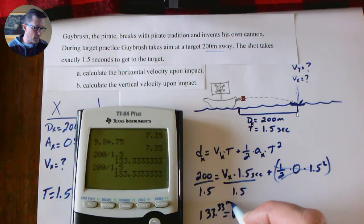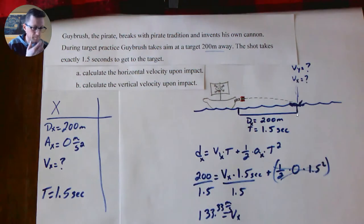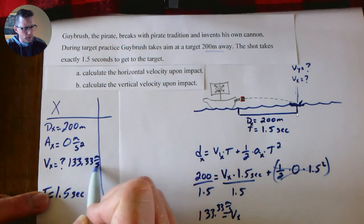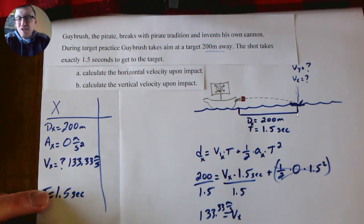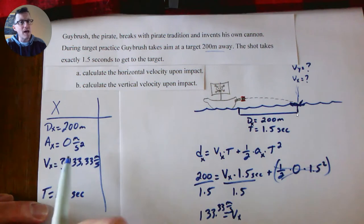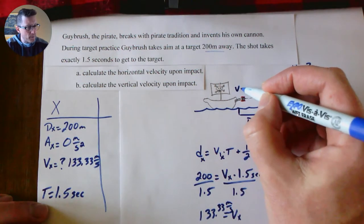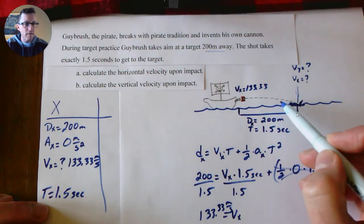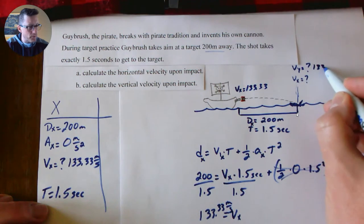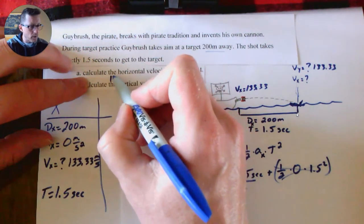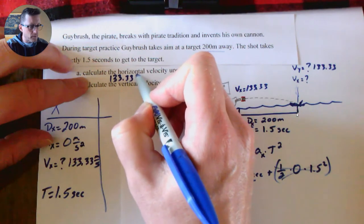Now that goes right here, but is that the velocity when it launched, when it lands—what is it? It's actually all of them. Remember, for the x velocity, if your acceleration is zero, that means the velocity doesn't change. Acceleration is change of velocity. So my Vx at my pirate ship here is 133.33—that's 133.33 everywhere. So right here, it's also 133.33. So calculate the horizontal velocity upon impact: that is 133.33 meters per second.